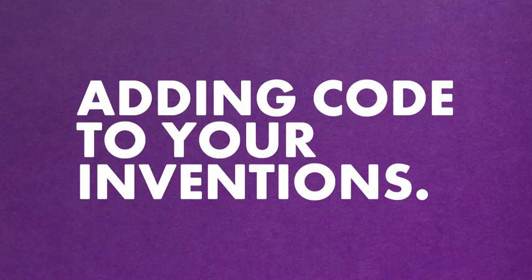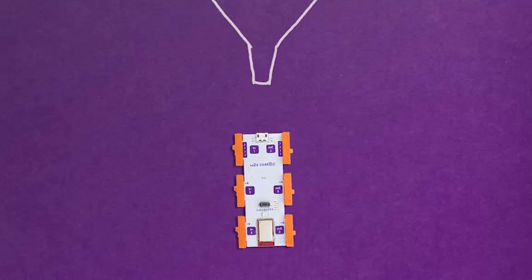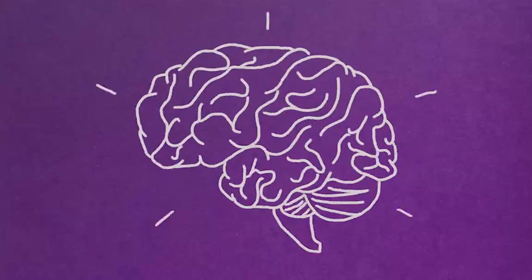Now that we've got some bit basics down, let's learn how to add code to our inventions. To do that, we're going to need to add a super powerful bit. The code bit! The code bit is a tiny computer that connects to the little bits code kit app on your computer. You can tell the code bit what to do by creating code and uploading it to your bit wirelessly. Think of it like a brain for your little bit circuits.